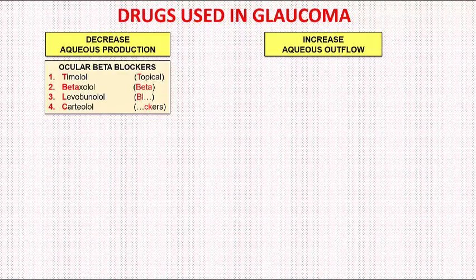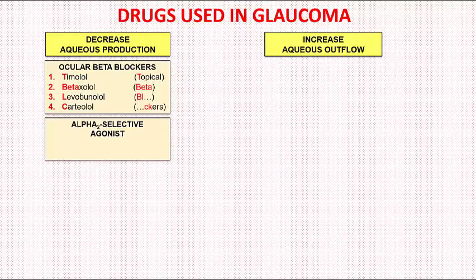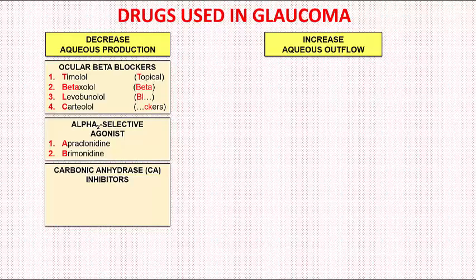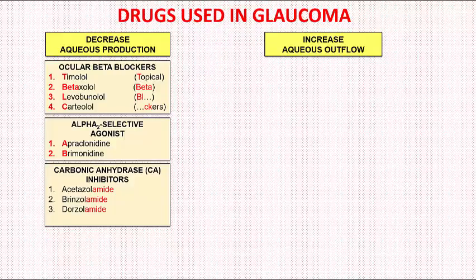The next class is alpha-2 selective agonists. The drugs available in this class are apraclonidine and brimonidine — remember A and B. The third class is carbonic anhydrase inhibitors. The drugs available in this class are acetazolamide, brinzolamide, and dorzolamide — remember A, B, and D. The carbonic anhydrase inhibitors are sulfonamide derivatives, therefore their names end with the letters 'amide'.